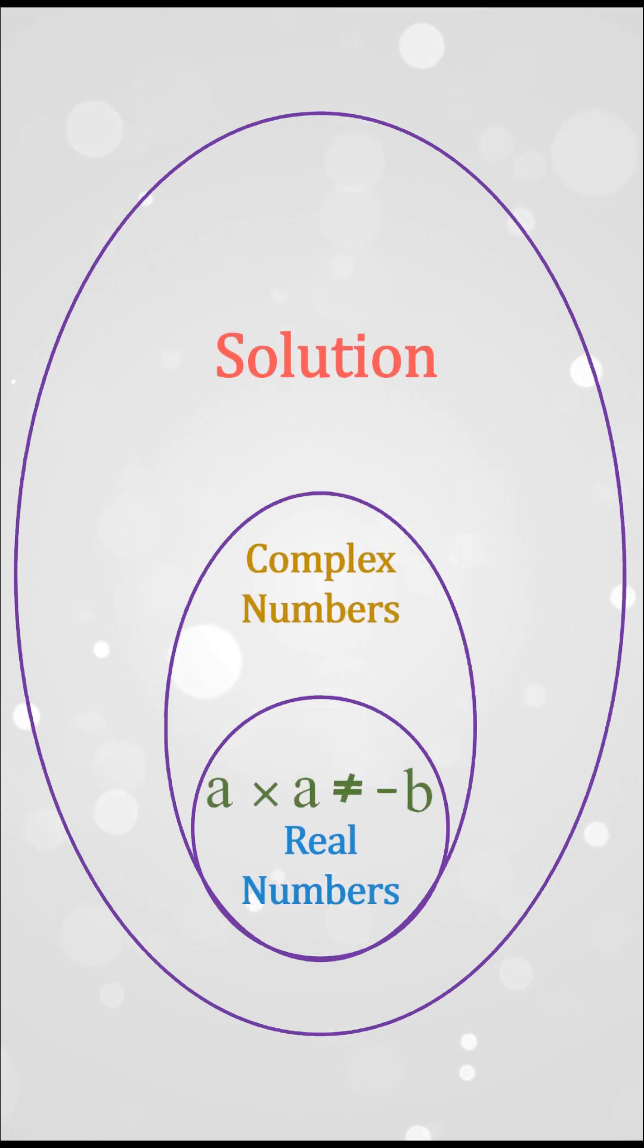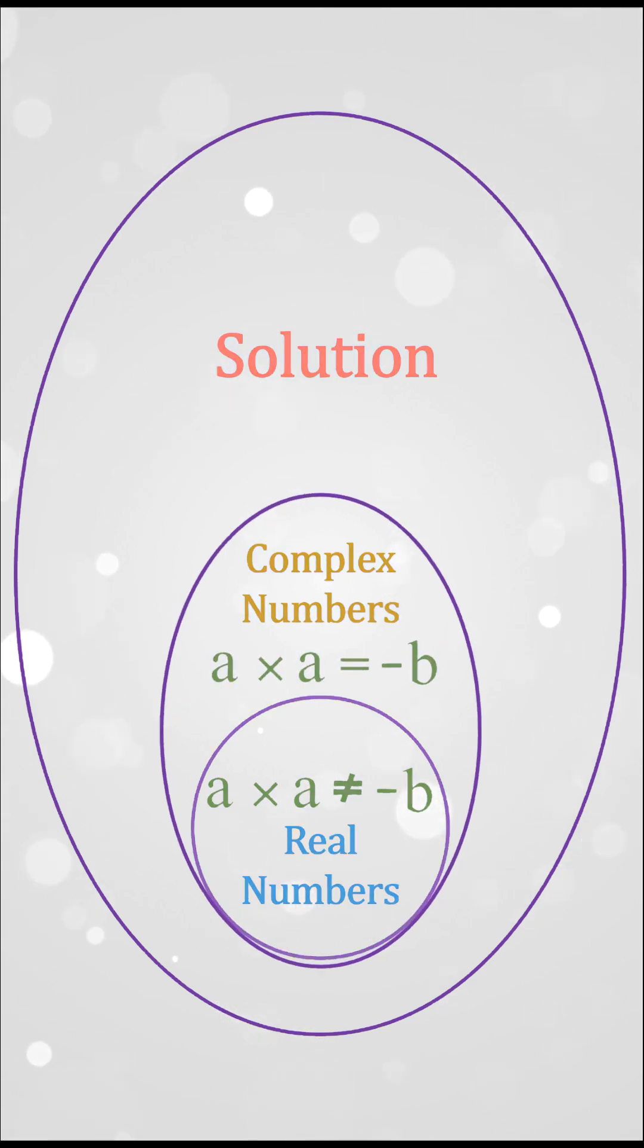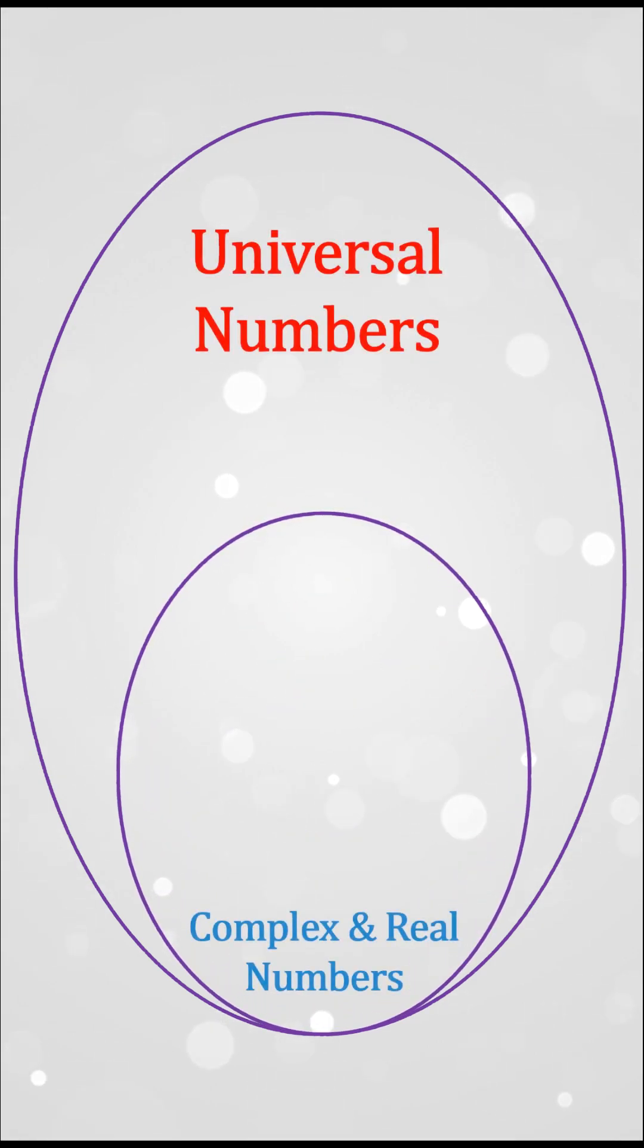a times a equals minus b contradicts in real numbers, but it is valid outside the real number system. Similarly, a newly discovered universal numbers system gives solutions to all indeterminate forms,